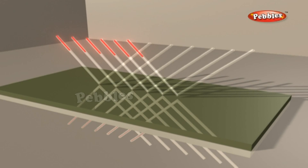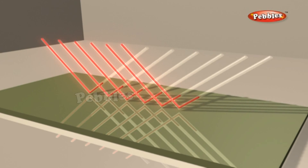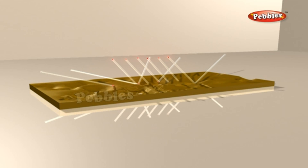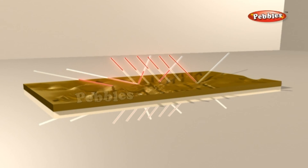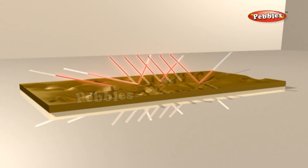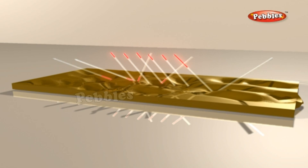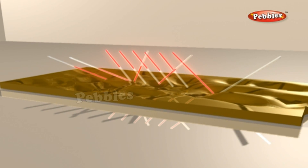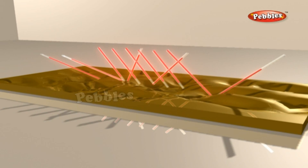Regular reflection occurs when a beam of light falls on a smooth and polished surface, such as a plane mirror. A parallel beam of light falling on a plane mirror reflects as a parallel beam in a fixed direction. Irregular reflection takes place when the reflecting surface is not smooth or polished — for example, walls, wood, paper, and metal. In this case, different parts of the surface reflect incident light in different directions. If a parallel beam of light is incident on a rough surface, the reflected light spreads over a wide area — this is called diffused or irregular reflection. It is diffused light that enables us to see objects around us.